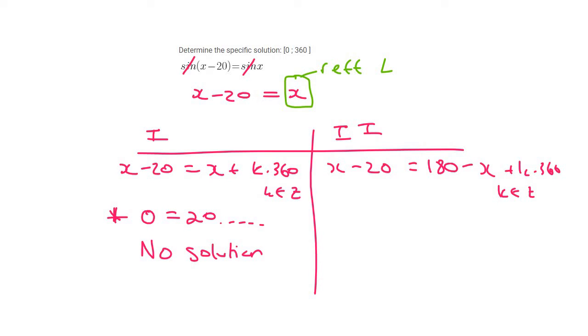For this one on the right-hand side, you would bring the minus x over, where it will become positive, and so you'd end up with 2x is equal to 200 plus k times 360, k is an element of z. You could then get x alone as 100 plus k times 180, k is an element of z.